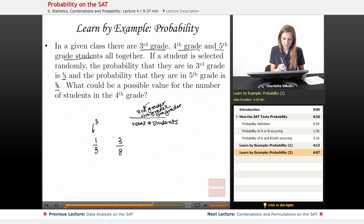So if I add these two, I could find the probability that I'm picking either a 3rd or a 5th grader. And then I could maybe subtract that probability to figure out what probability I have of picking a 4th grader.